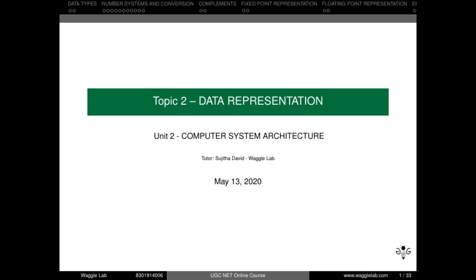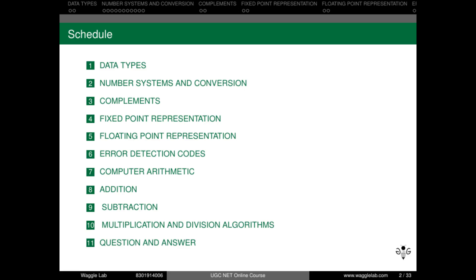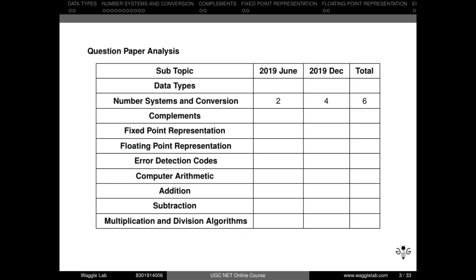Hi everyone. In this lecture we will discuss the topic data representation, which comes under Unit 2: Computer System Architecture. Since this is a crash course for the UGC NET exam, as mentioned in earlier lectures, we are not covering all topics — we are focusing only on the most relevant ones. After analyzing previous question papers from June 2019 and December 2019, we found that all questions were from number systems and conversion. So in this class, we will discuss this topic in detail.